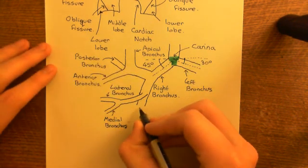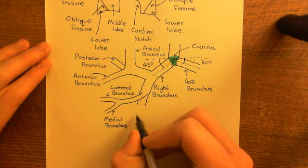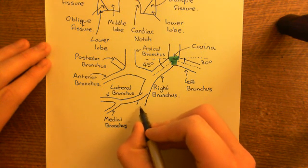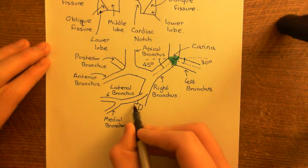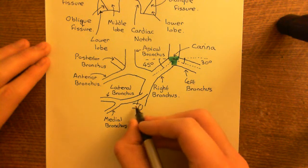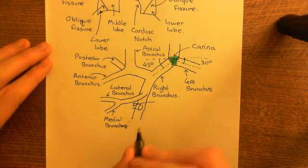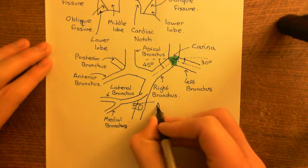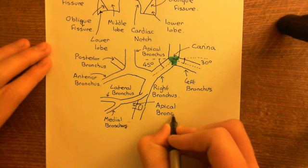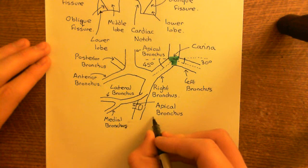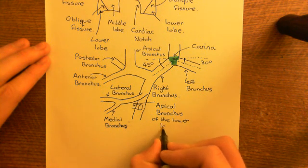The first bronchus comes off earlier from the behind of the main bronchus coming down to supply the lower lobe. A branch comes off going backwards, supplying the top of the lower lobe, and the rest continues downwards. This bronchus coming off from the back is known as the apical bronchus of the lower lobe of the right lung. This is confusing because we already have an apical bronchus supplying the upper lobe, so you must specify: apical bronchus of the lower lobe of the right lung.